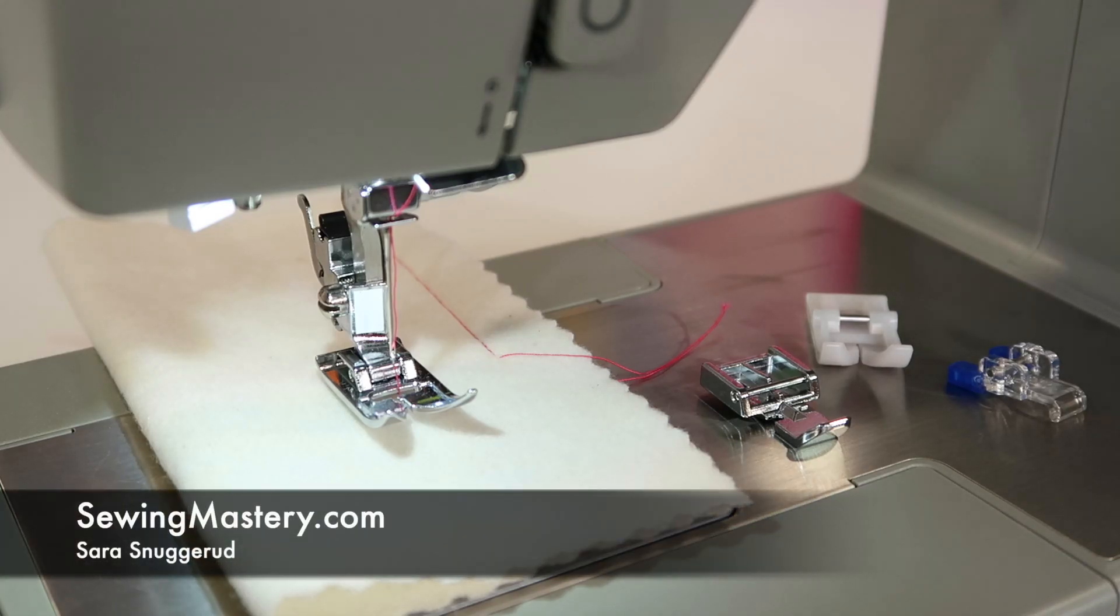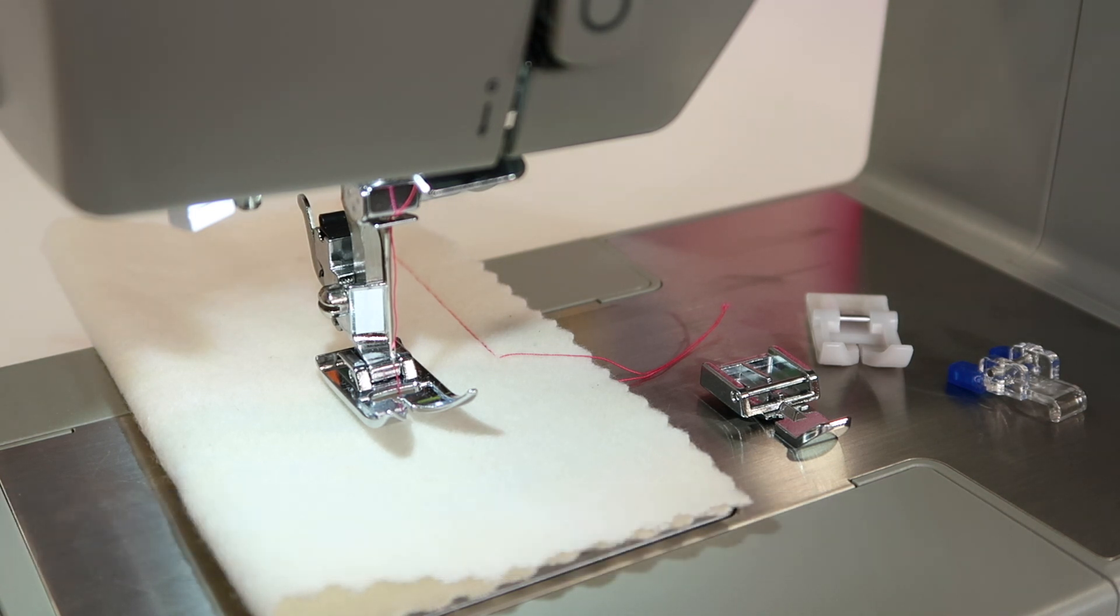There are six presser feet that come with the Singer Heavy Duty 4452 Sewing Machine. I'm going to show you just how easy they are to get off the machine and switch about.